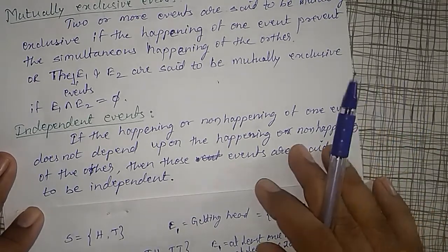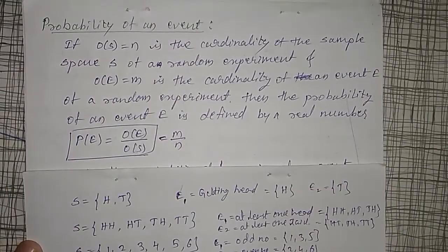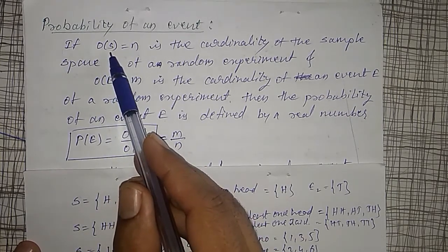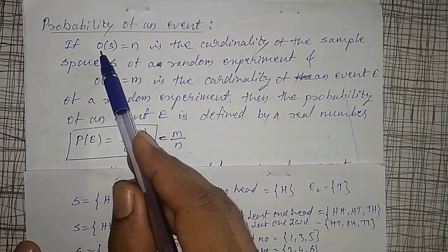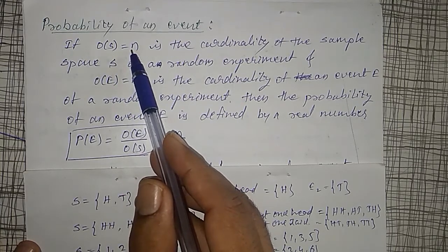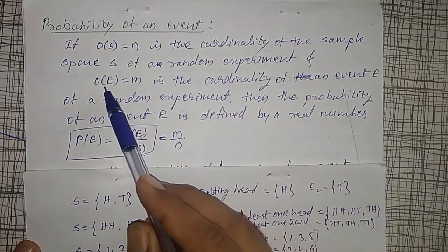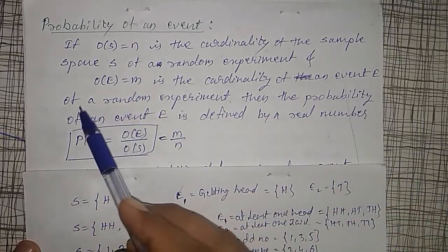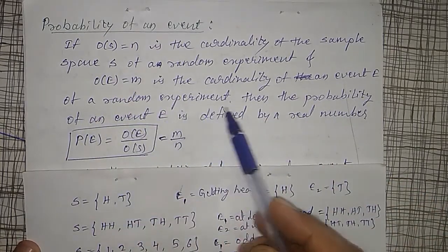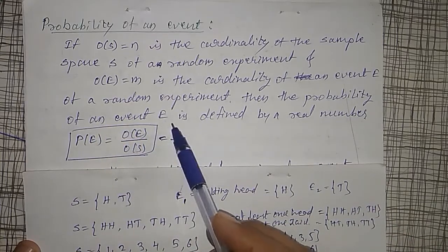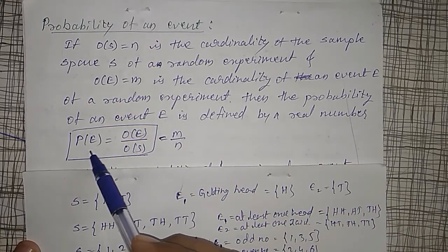Now let me define the probability of an event. If the cardinality of sample space S is equal to n, and the cardinality of event E is equal to m, then the probability of an event E is defined as a real number: probability of E equals the order of E divided by the order of S, that is m divided by n.